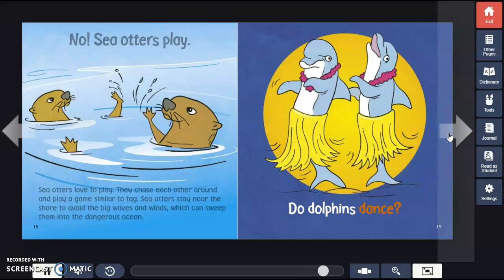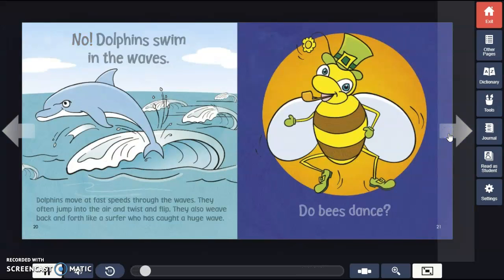Do dolphins dance? No! Dolphins swim in the waves. Dolphins move at fast speeds through the waves. They often jump into the air and twist and flip. They also weave back and forth like a surfer who has caught a huge wave.